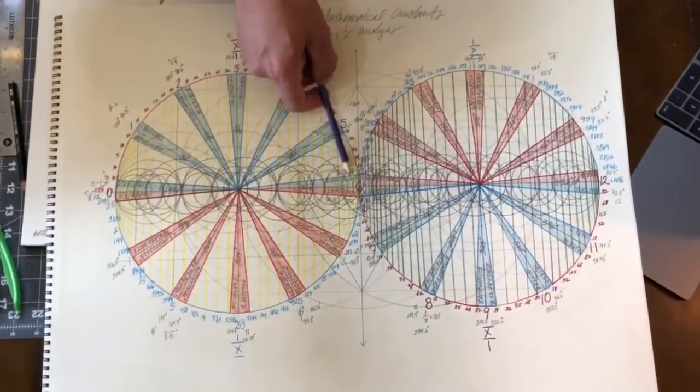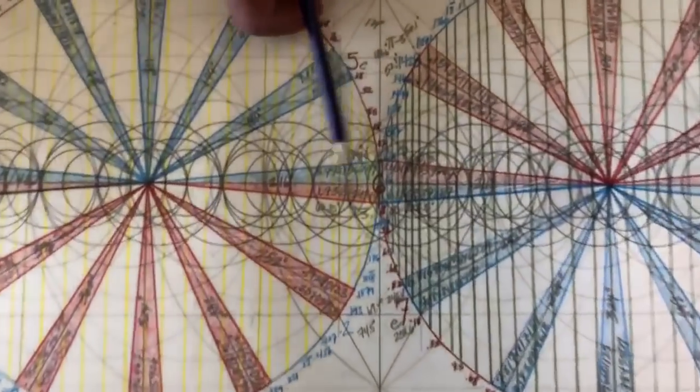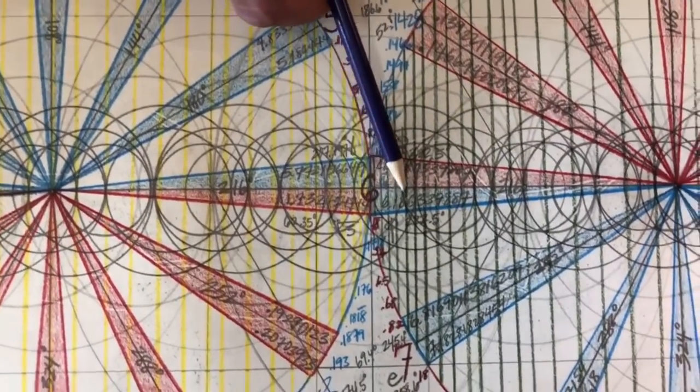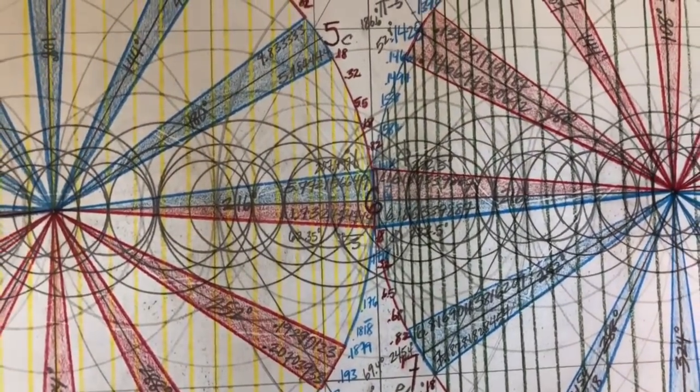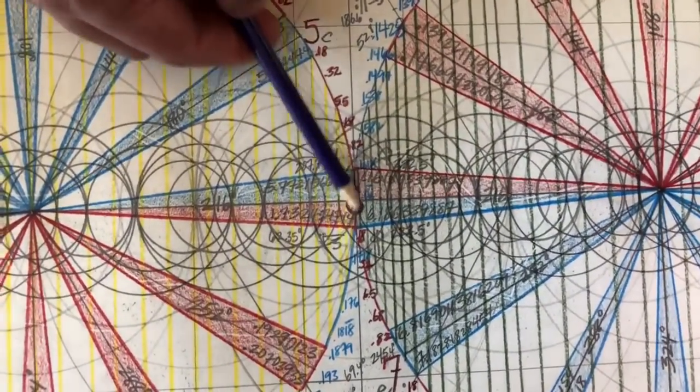We have the same thing with gamma, which is the Euler-Mascheroni number here at 5.772, and then it would be 6.180339887, which is phi. So gamma and phi, that's the boundary condition on the number 6.